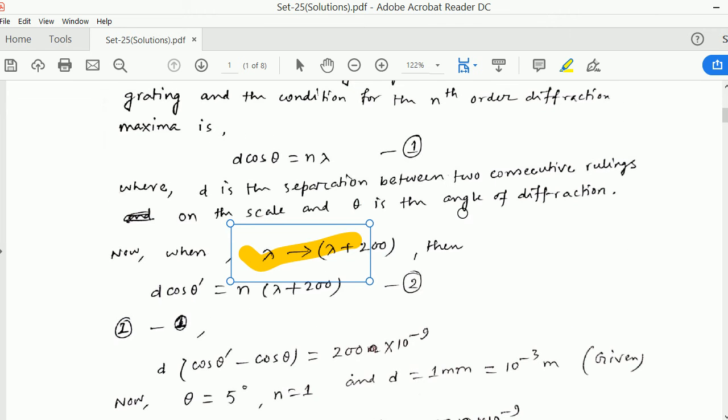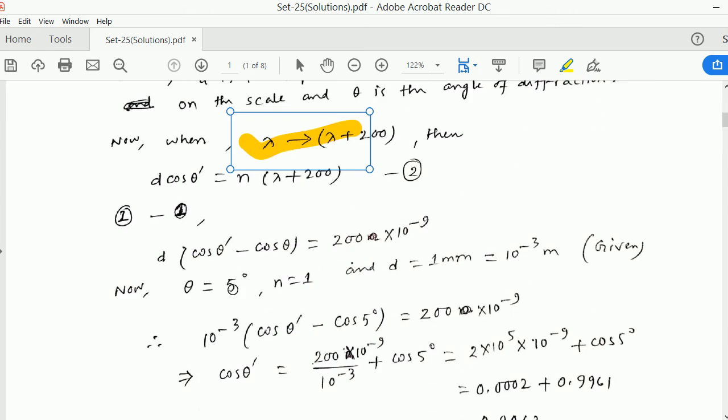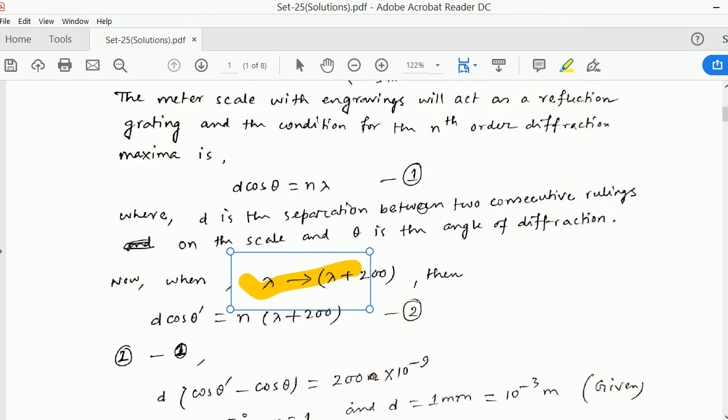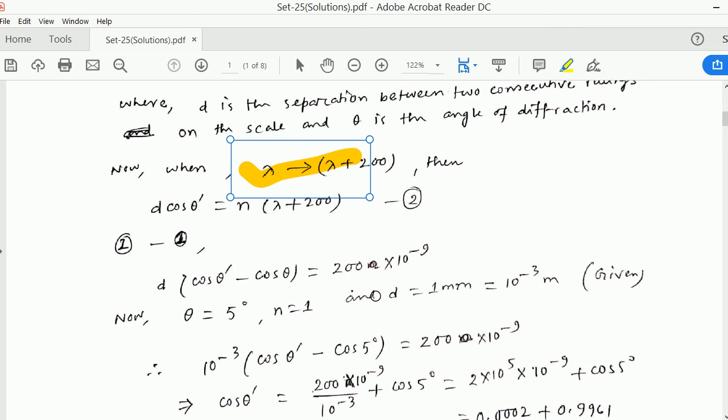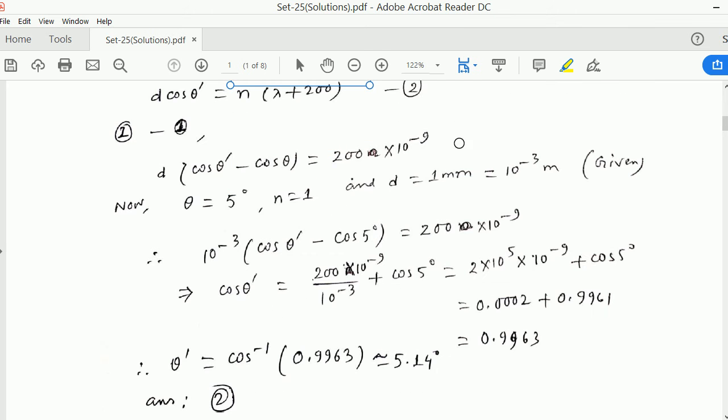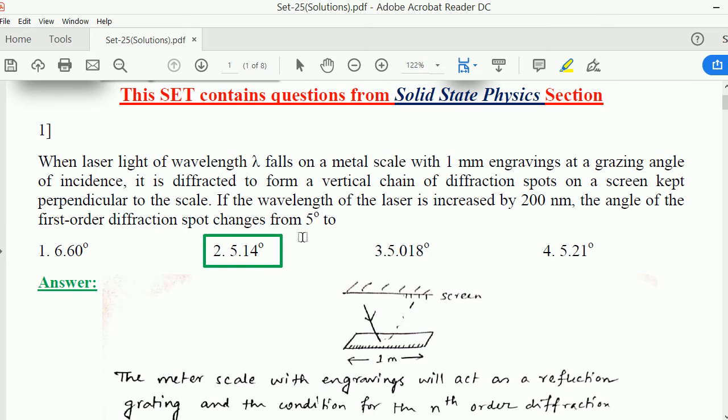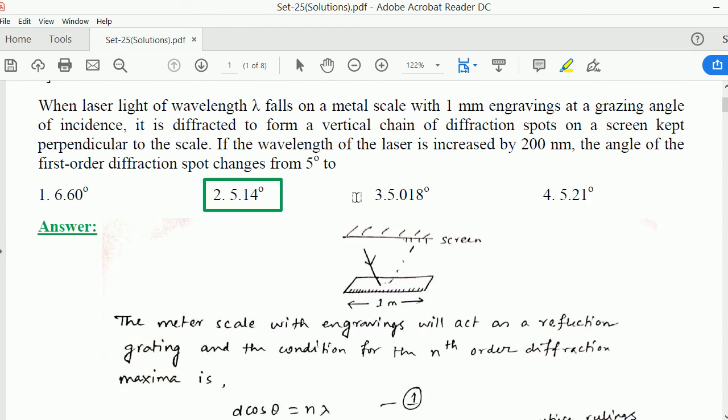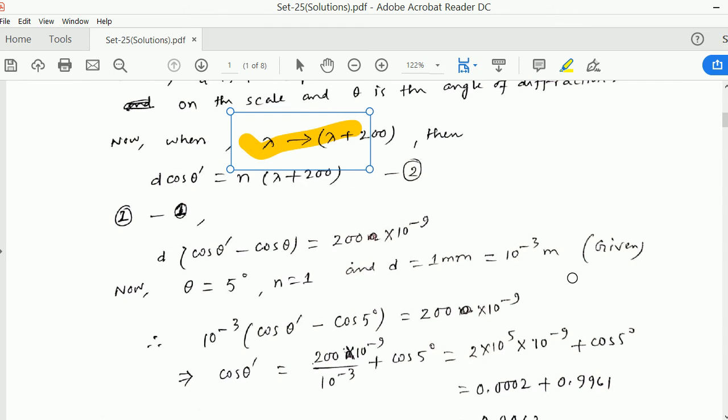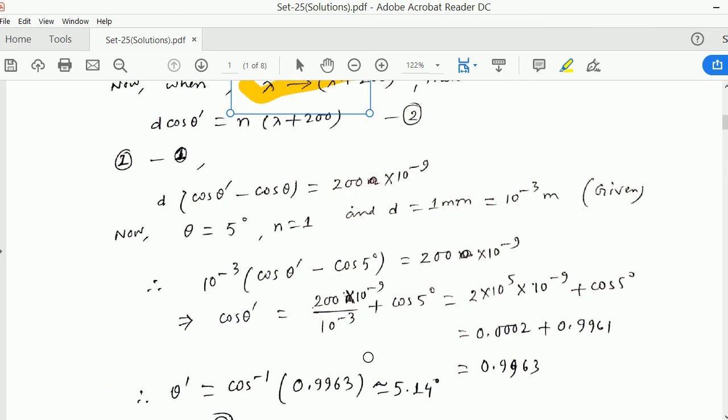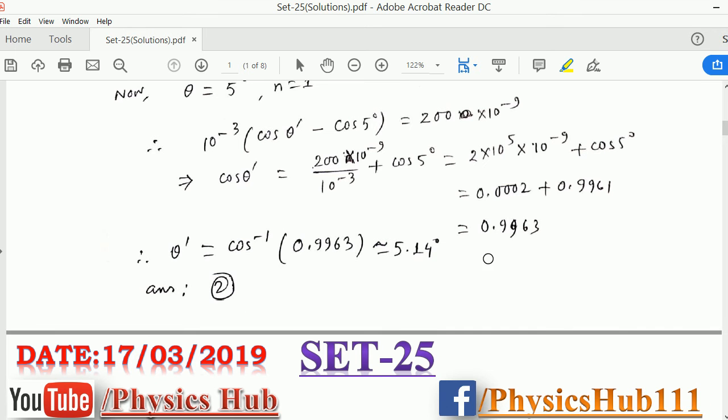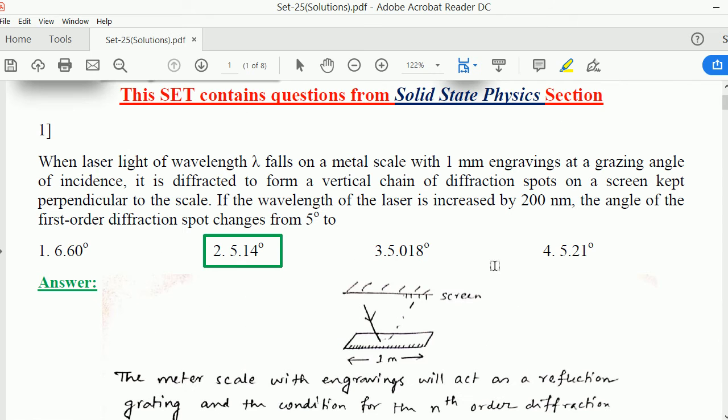Now we are just subtracting equation 1 from equation 2. So D times (cos theta prime minus cos theta) equals 200N in nanometer, but we convert to SI units: 200 times 10 to the minus 9. The information given is theta equals 5 degrees, N equals 1, D equals 10 to the minus 3 meters. Therefore we get cos theta prime to be 0.9963, and theta prime equals 5.14 degrees. So option 2 is the correct option.